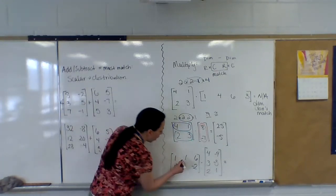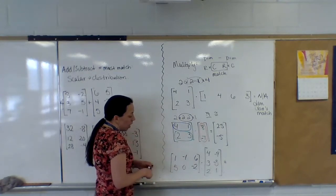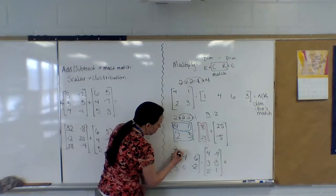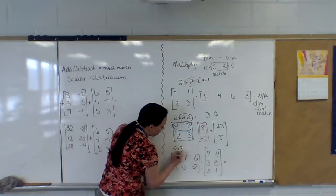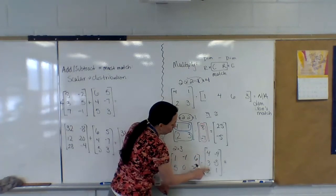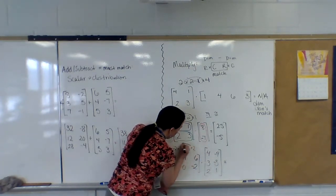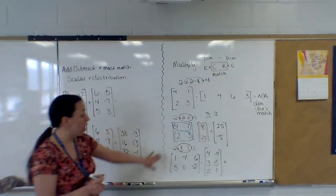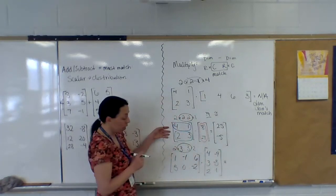So please be careful, this one when I was pointing to it before, it was supposed to be a negative one. So let's count. One, two rows. One, two, three columns. One, two, three rows. One, two columns. Those do match up. Good. Since they match up we can do it and our answer is going to be a two by two, which means it's going to be a smaller thing like this.